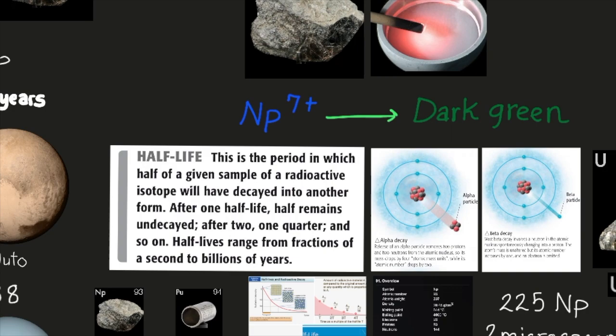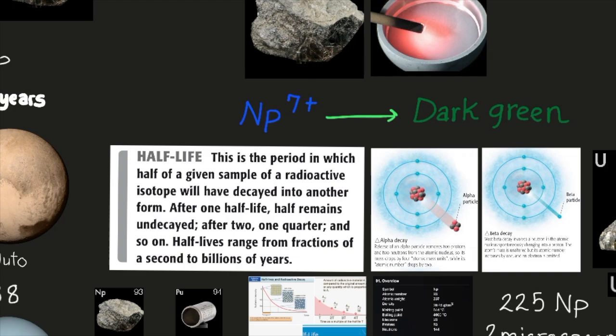This is the period in which half of a given sample of a radioactive isotope will have decayed into another form. After one half-life, half remains undecayed. After two, one quarter, and so on. Half-lives range from fractions of a second to billions of years.